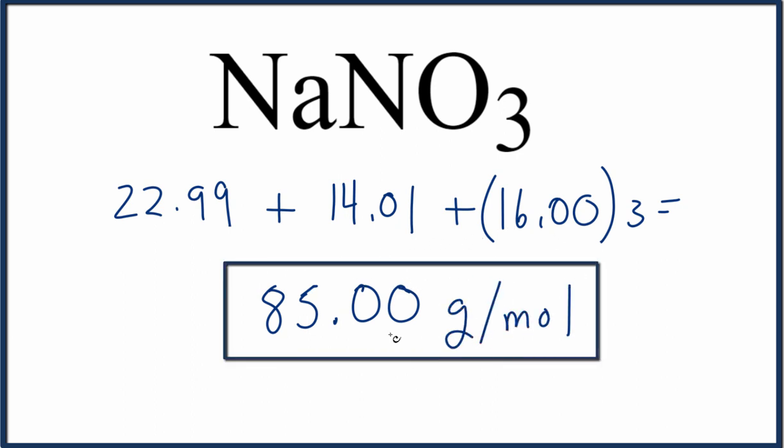It's important to note that you should write the .00. We have two decimal places for each one of these, and you should have that in your answer, as well as the units grams per mole. You may get a slightly different value than 85.00 depending on the periodic table you use and how many digits you round to.